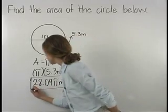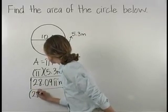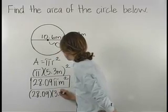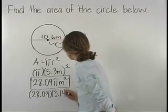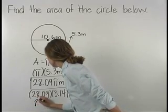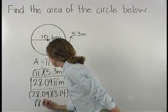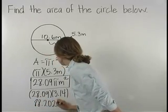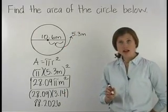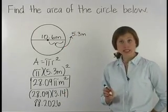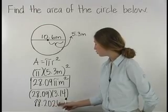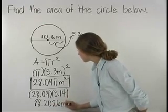So we have 28.09 times 3.14, which is equal to 88.2026. So the area of the circle is approximately equal to 88.2026 meters squared.